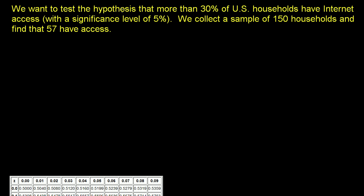We want to test the hypothesis that more than 30% of US households have internet access, with a significance level of 5%. We collect a sample of 150 households and find that 57 have access. To do our hypothesis test, let's establish our null hypothesis and our alternative hypothesis.